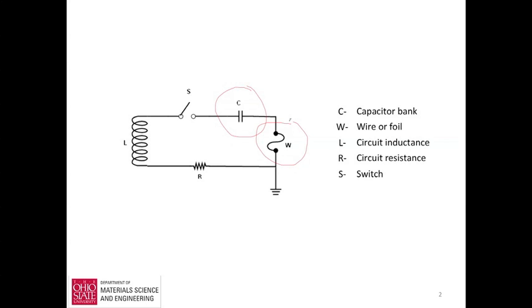When the energy deposition rate into the conductor is very high, which happens when the current in the circuit reaches its maximum very quickly, the metal conductor can be heated above its energy sublimation before it has time to melt.